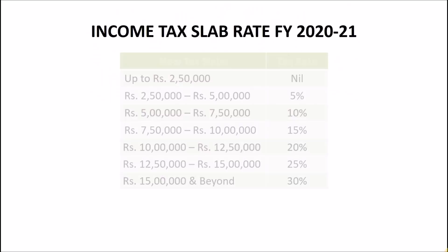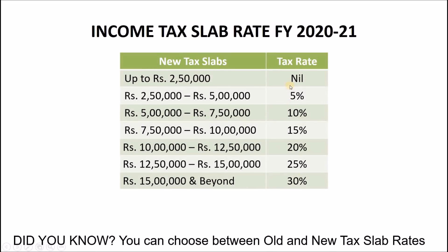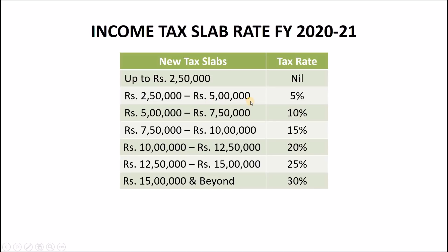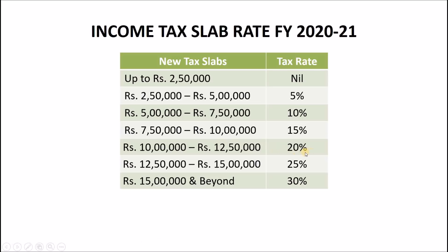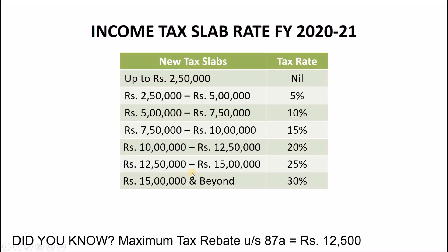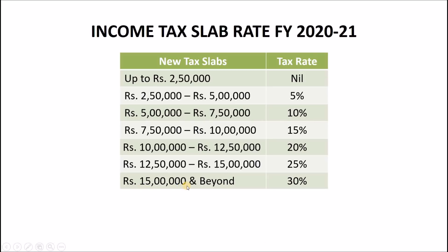The new tax slab rates introduced in Budget 2020 are: no income tax on income between Rs 0 to Rs 2.5 lakhs; 5% tax on income between Rs 2.5 lakhs to Rs 5 lakhs; 10% tax on income between Rs 5 lakhs to Rs 7.5 lakhs; 15% tax on income between Rs 7.5 lakhs to Rs 10 lakhs; 20% tax on income between Rs 10 lakhs to Rs 12.5 lakhs; 25% tax on income between Rs 12.5 lakhs to Rs 15 lakhs; and 30% tax on income above Rs 15 lakhs. These are the reduced tax slab rates compared to the old tax slab rates, which are still applicable.